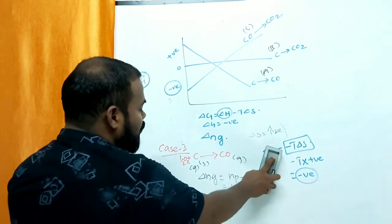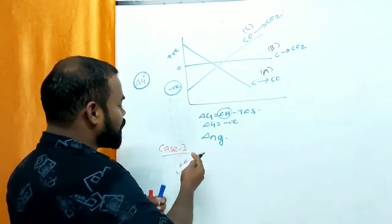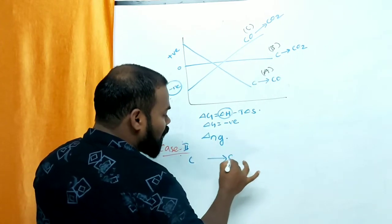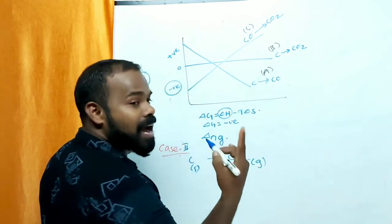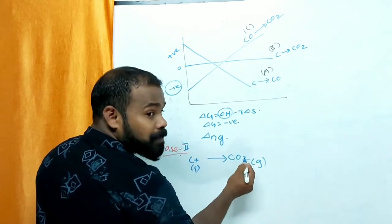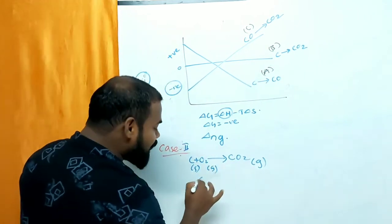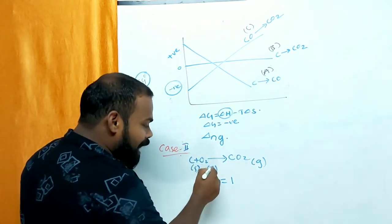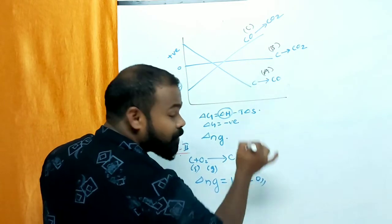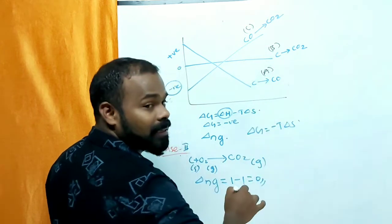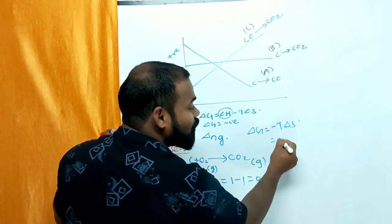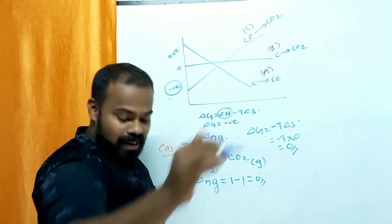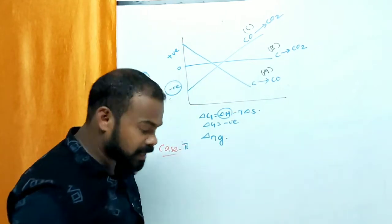In Case 2, consider C gives CO₂: C + O₂ → CO₂. Carbon is solid, CO₂ is gas, O₂ is gas. Δng = product (CO₂ = 1) minus reactant (O₂ = 1) = 1 − 1 = 0. So ΔG = −T×ΔS = −T×0 = 0. Therefore, this line passes along zero — it is a horizontal line in the graph, neither going up nor down.